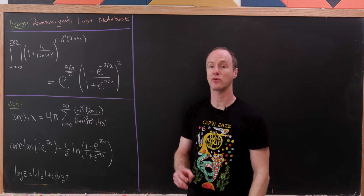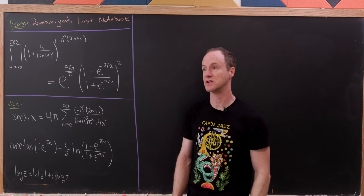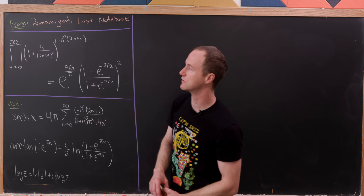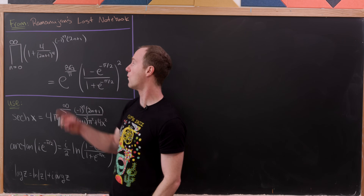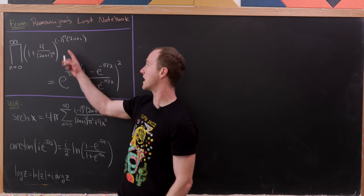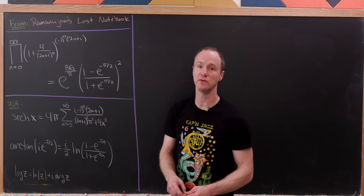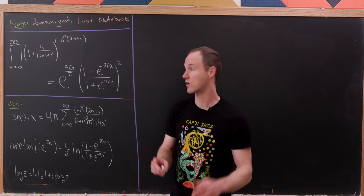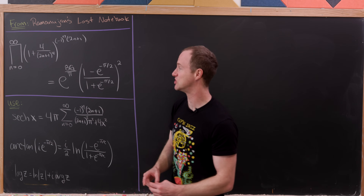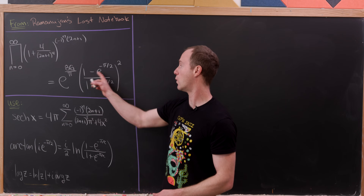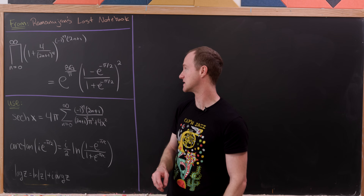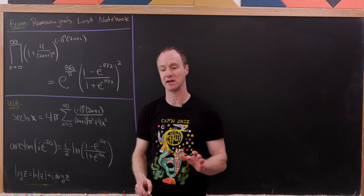Today we've got a really nice infinite product identity from Ramanujan's lost notebook. We've got the product as n goes from 0 to infinity of 1 plus 4 over (2n+1) to the 4th power, all raised to the power of (-1)^n times (2n+1). That product equals e to the 8g over pi, times (1 minus e to the minus pi over 2) over (1 plus e to the minus pi over 2), all squared, where g is the Catalan constant.